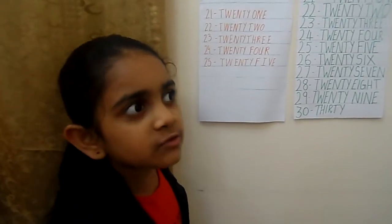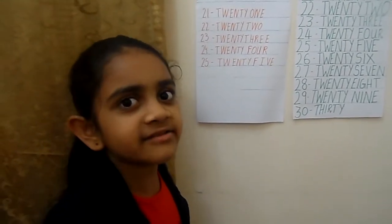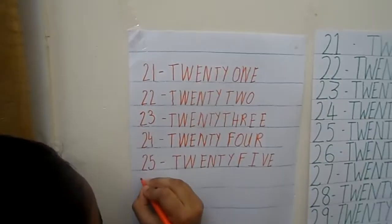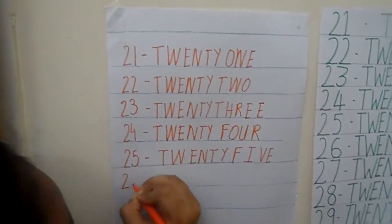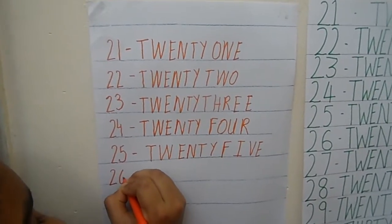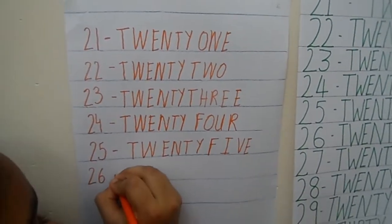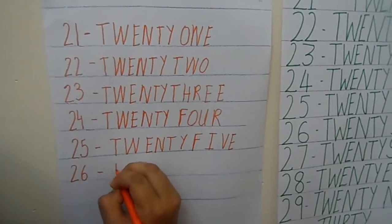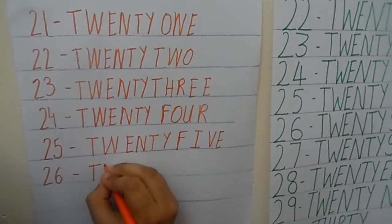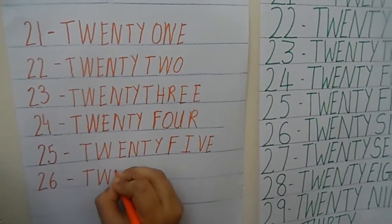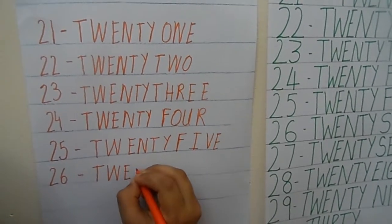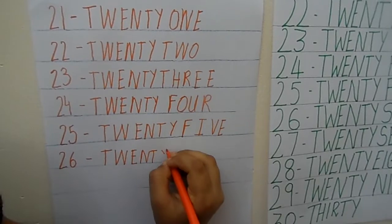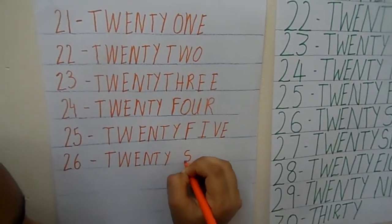Now what is the next number? 26. We learnt 2 and 6, so let's write it. 2, then a 6. Very easy right? Now let's see the number name of 26: T, W, E, N, T, Y, S, I, X.